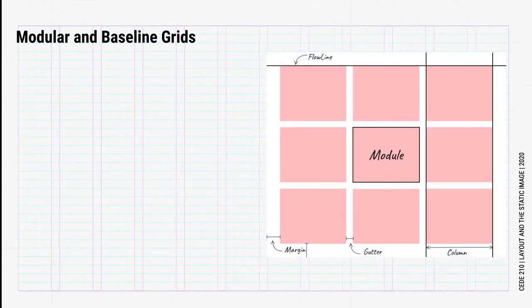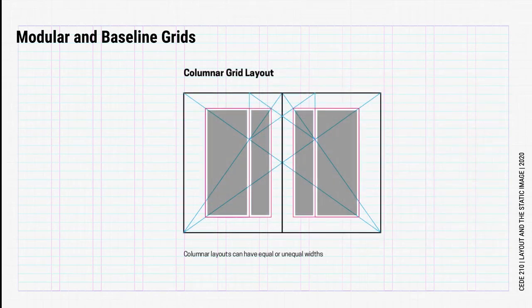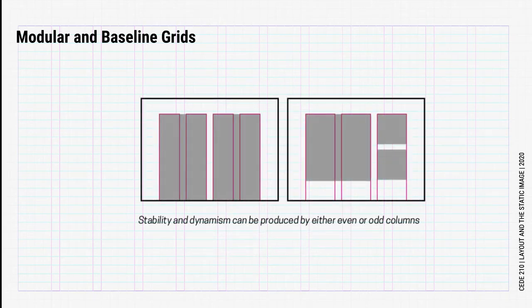Modular grids are simple in principle. Here's a review of how it fits into what we've already learned. We started with columnar grids. Columnar grids are an effective way to fit a lot of content on the page. Columnar layouts can have equal or unequal widths. Remember that a feeling of stability or dynamism can be produced by either having odd or even columns.